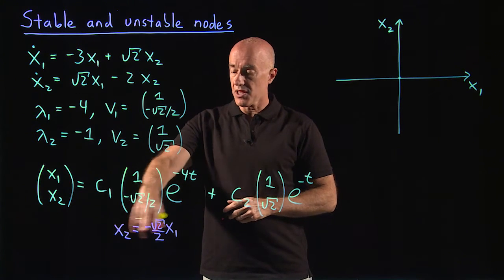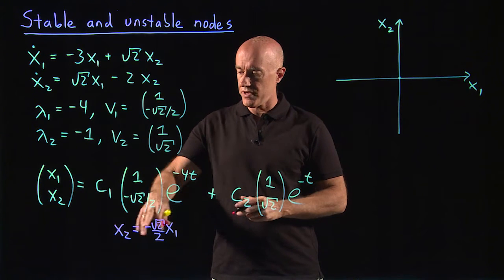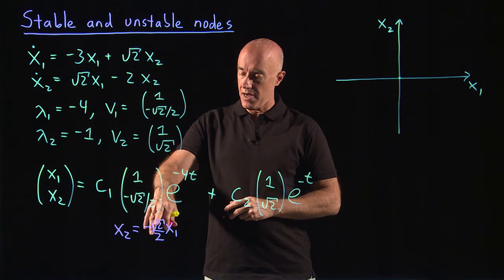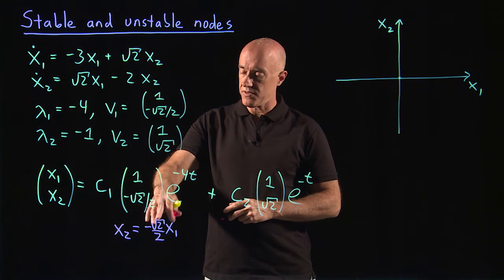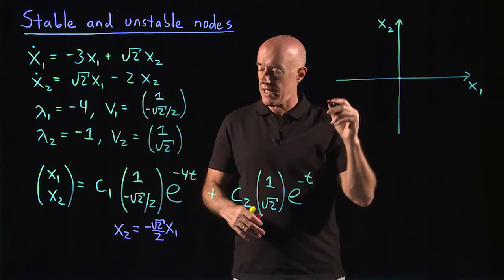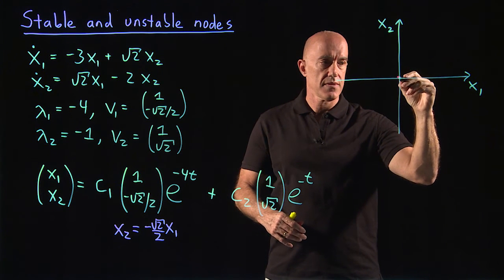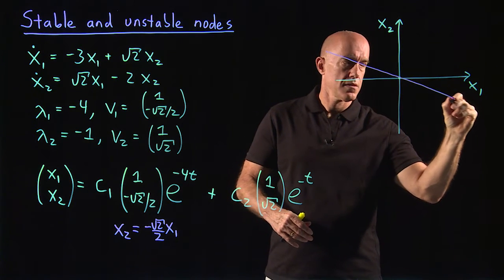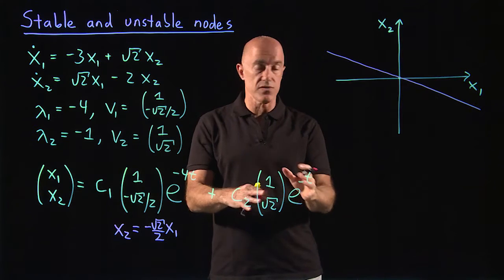This is an equation for a line. So on our phase portrait, we can draw this line. This is a line of negative slope, slope is slightly larger than minus 1, so it's less shallow. So it looks something like this.